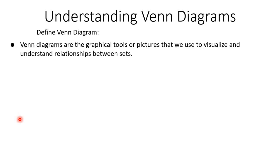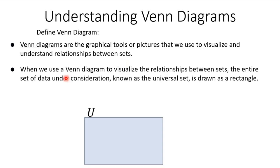Venn diagrams are the graphical tools or pictures that we use to visualize and understand relationships between sets. When we use a Venn diagram to visualize the relationship between sets, the entire data set under consideration, also known as the universal set, is drawn as a rectangle. This U represents the universal set along with this rectangle.